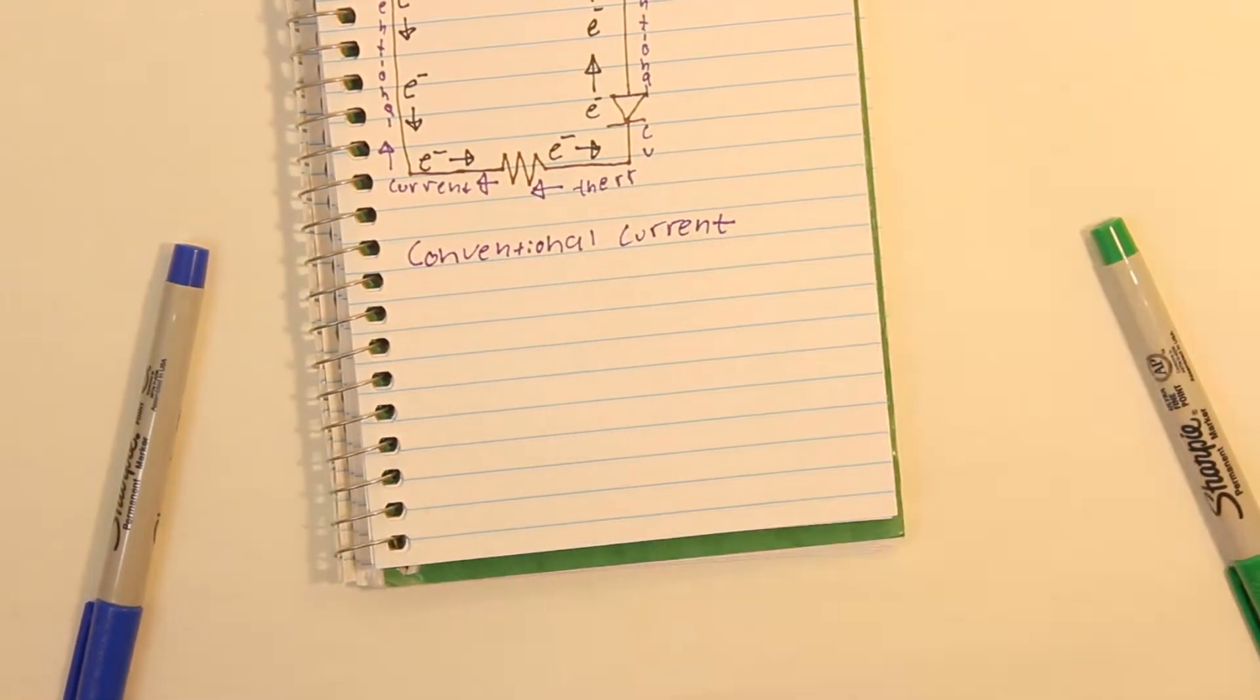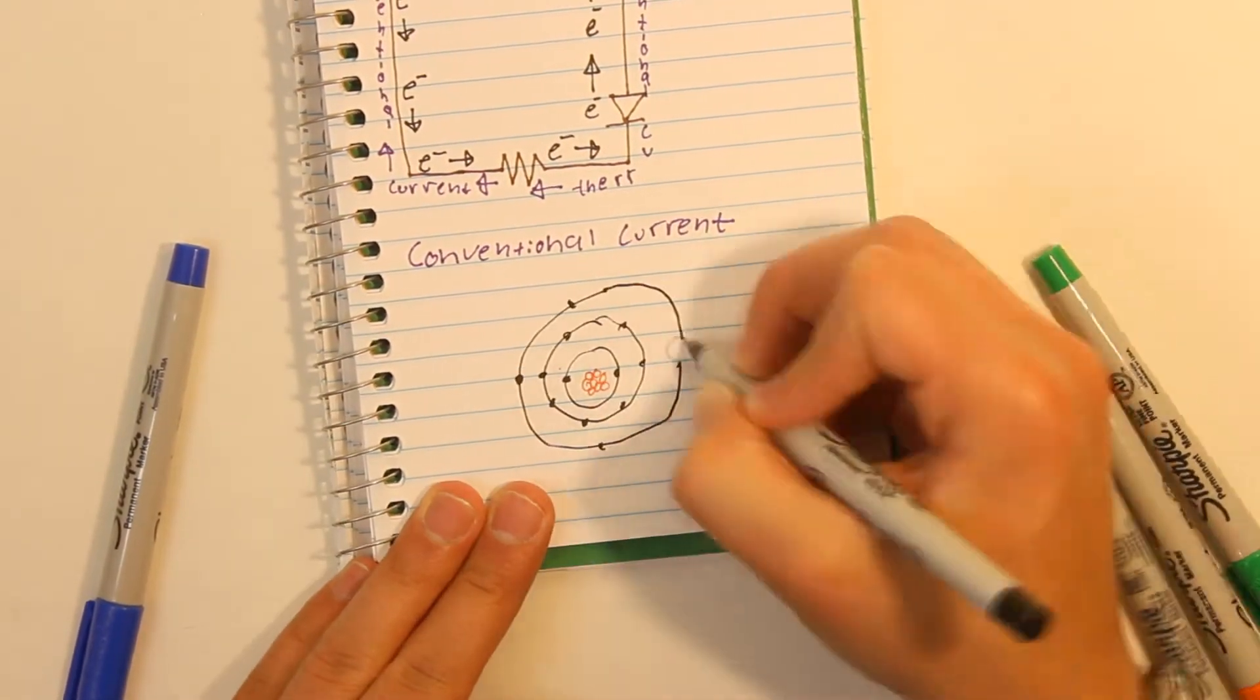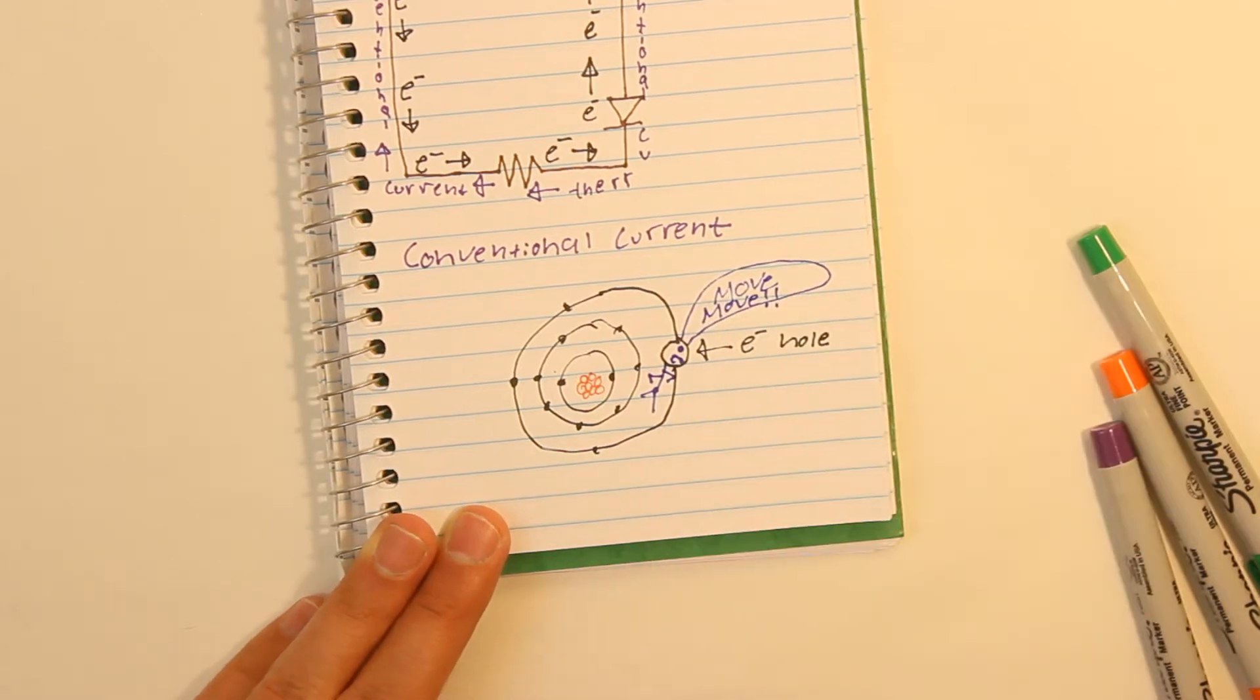Conventional current is the movement of electron holes, which are when atoms could have one more electron in their valence shell, but they do not.